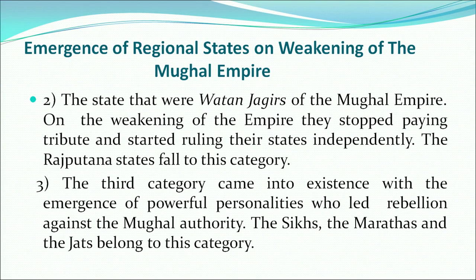The second type of state was known as Vatan Jagirs — states under the Mughal Empire that had to pay tribute for their self-rule, enjoying autonomous ruling power. On the weakening of the empire, they stopped paying tribute and started ruling their states independently. The Rajputana states fall into this category — Udaipur, Jaipur, and Jodhpur were all Vatan Jagirs of the Mughal Empire and all became independent after its weakening.